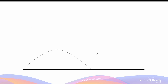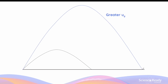When we increase uy, this increases the time the object spends in the air — the time of flight — which in turn increases the range or horizontal displacement. Unlike changing the horizontal component, increasing the vertical component also increases the maximum height, as you can see here. Conversely, decreasing the initial vertical component decreases the time of flight, decreases the range, and also decreases the maximum height, assuming the horizontal component is kept the same.